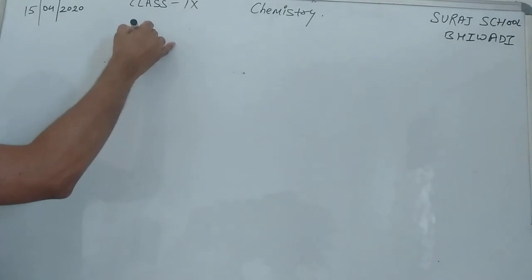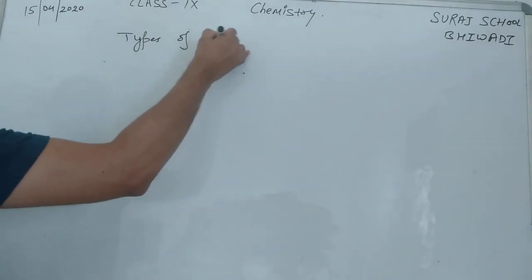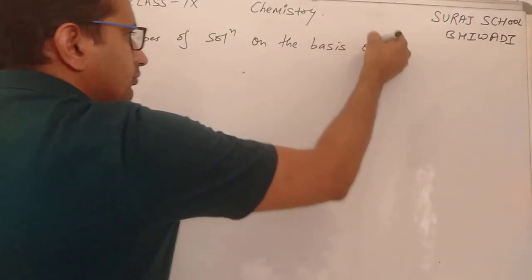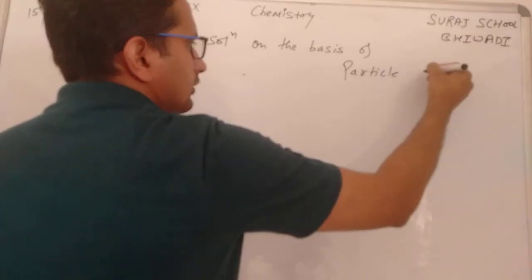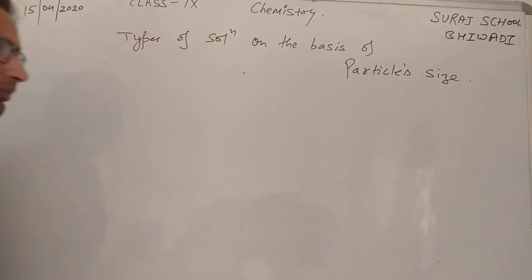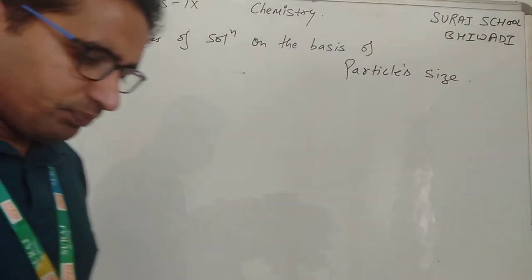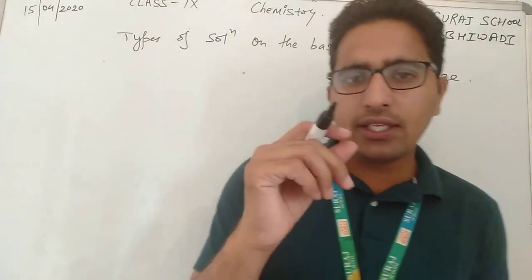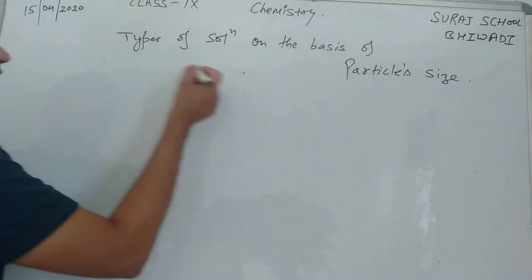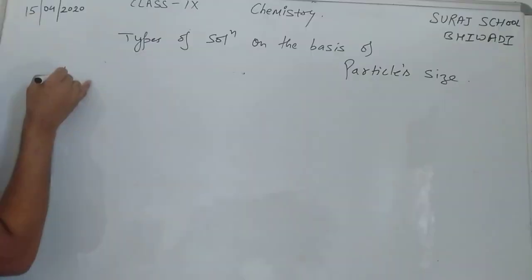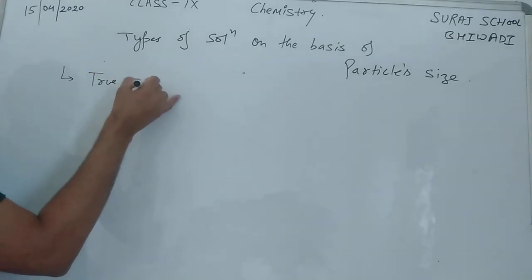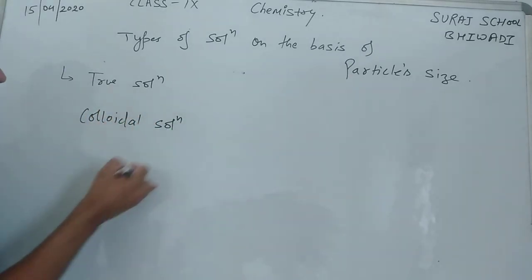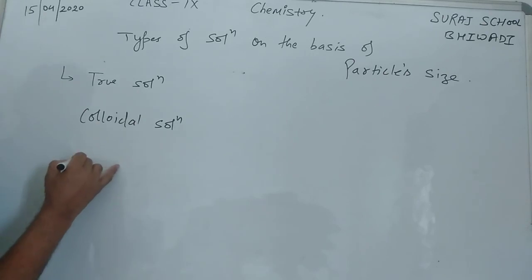Types of solution on the basis of particle size — particle size के हिसाब से solutions कितने तरीके के होते हैं? On the basis of phase हम complete कर चुके हैं: heterogeneous, homogeneous। वैसे ही particle के size के हिसाब से solutions के type तीन होते हैं: number one, true solution; number two, colloidal solution; and the third one, suspension solution.